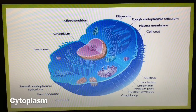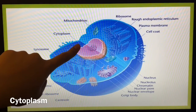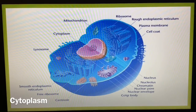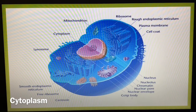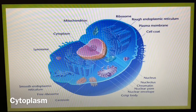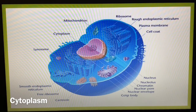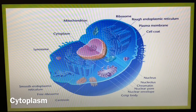Cytoplasm is a semi-fluid, gelatinous nutrient matrix. Within the cytoplasm are found insoluble storage granules and various cytoplasmic organelles, including the endoplasmic reticulum (ER), ribosomes, Golgi complexes, mitochondria, centrioles, microtubules, lysosomes, and other membrane-bound vacuoles.